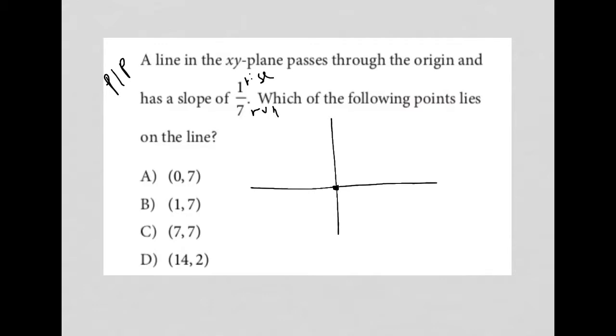So from the origin, I'm going to go up once, so let's make that 1. I'm going to run 7, so 1, 2, 3, 4, 5, 6, 7. So I have a point here and then connect those dots and that's what my line should look like.